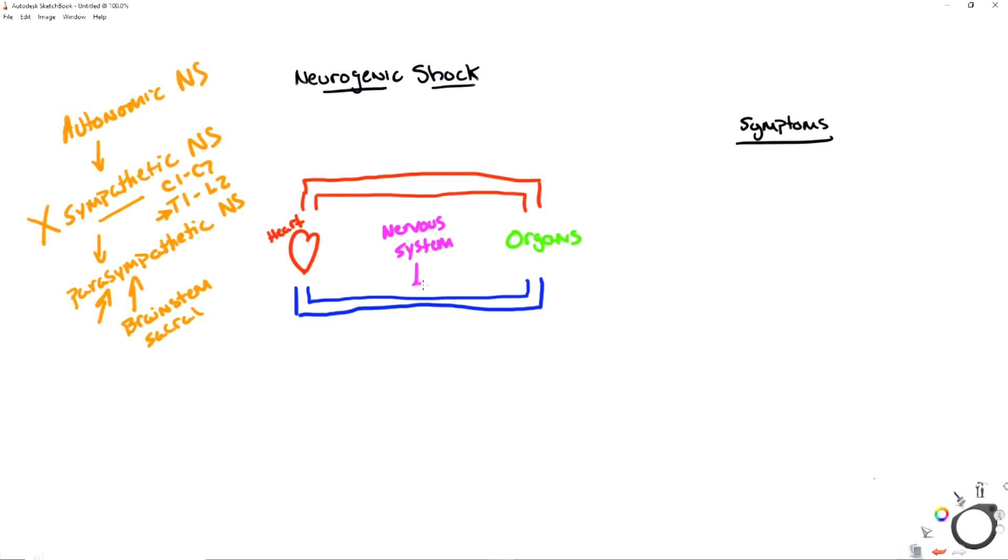It's still communicating to the heart and to organs and to vasculature via the parasympathetic nervous system, but it's no longer communicating via the sympathetic nervous system. So then what do you think happens?